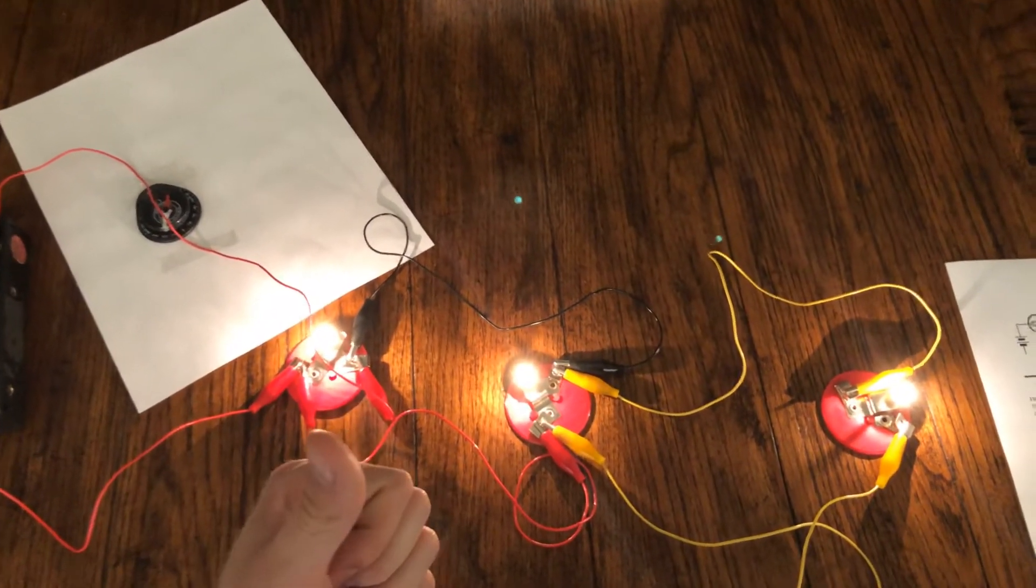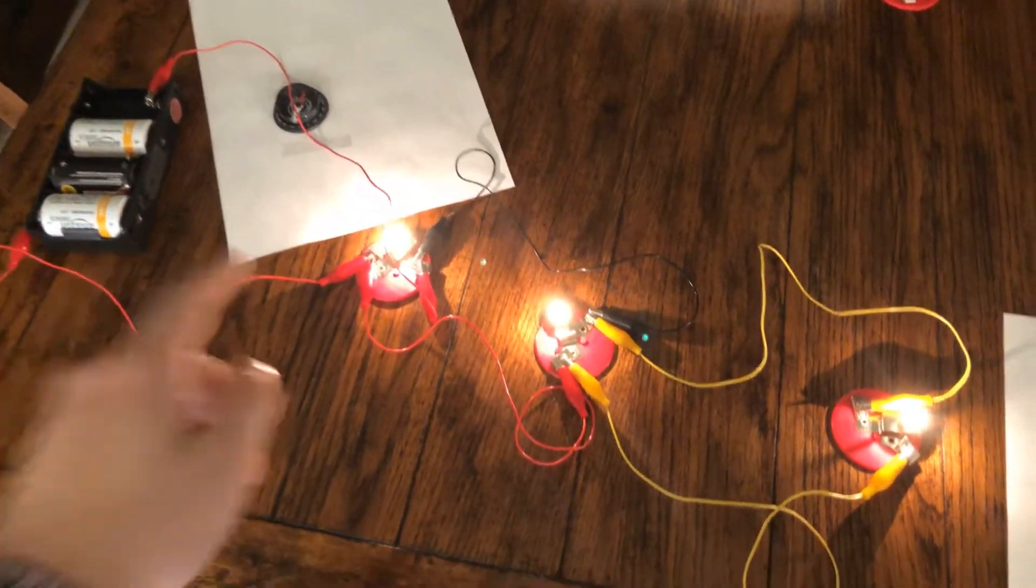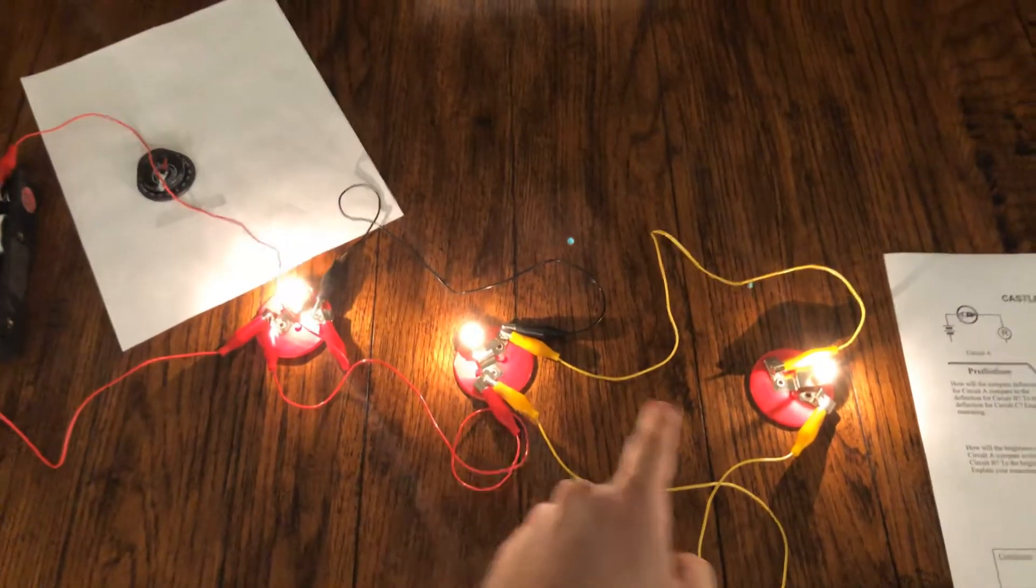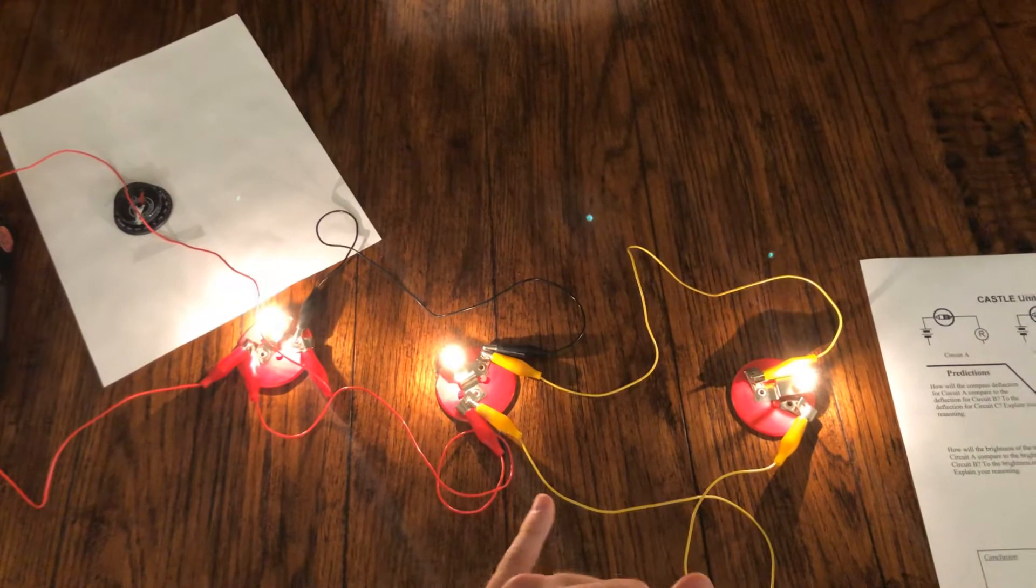As opposed to up. So adding bulbs in branches like this, or in parallel—which you'll see that term in the notes—adding them like this actually makes the resistance go down.